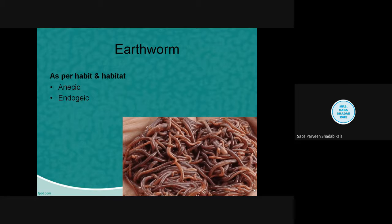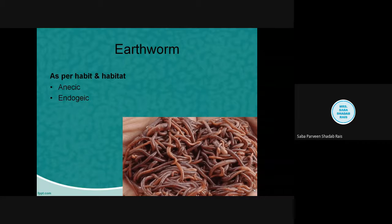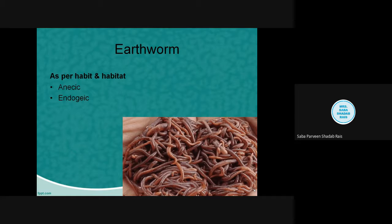The next category is endogeic — meaning 'within the earth.' These are also burrowing worms, but their burrows are shallow within the mineral layer. They feed on organic matter present inside the soil and rarely come to the surface. Examples include Allolobophora chlorotica, Aporrectodea caliginosa, Aporrectodea rosea, and Octolasion cyaneum — the earthworms staying within the earth.